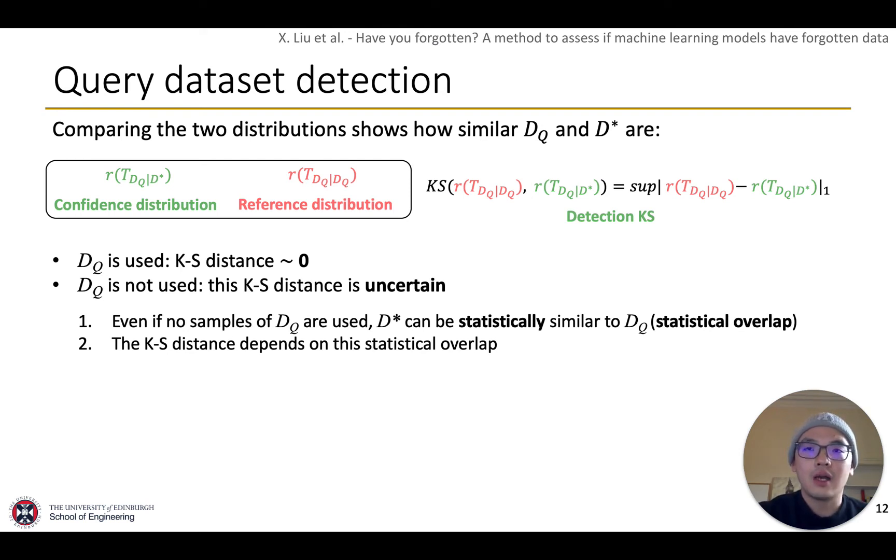To solve this uncertainty, we need to calibrate this overlap. So, how to measure this overlap without knowing D star?